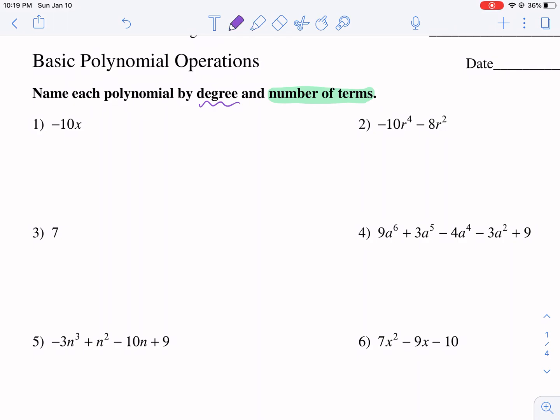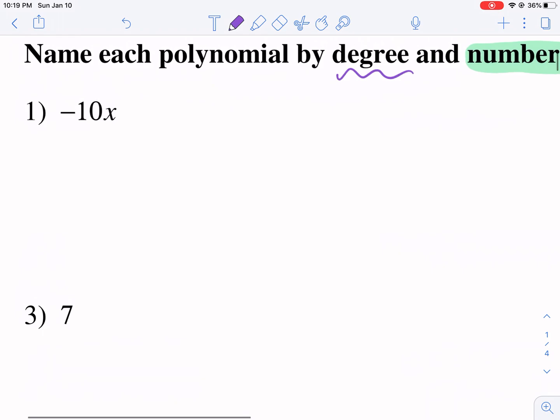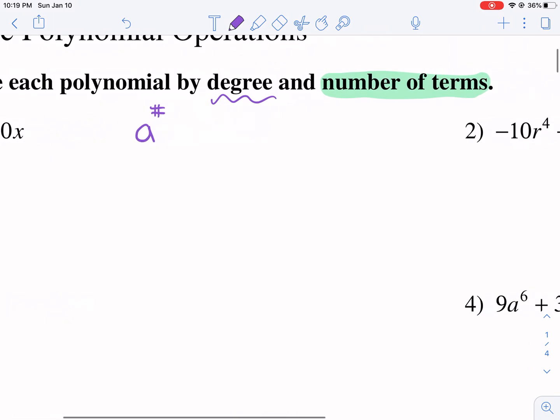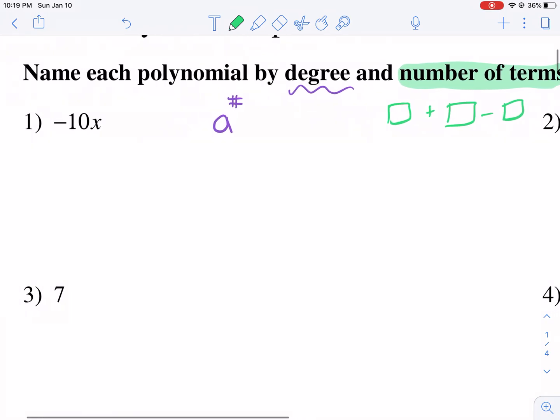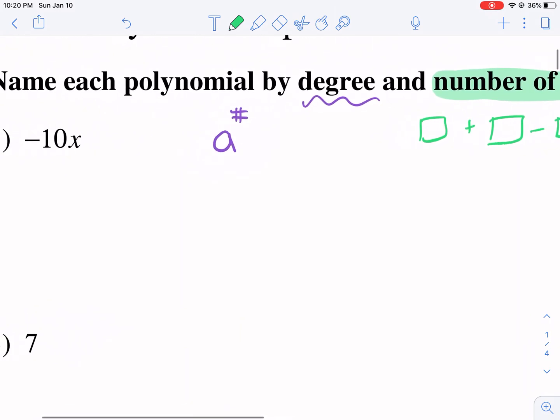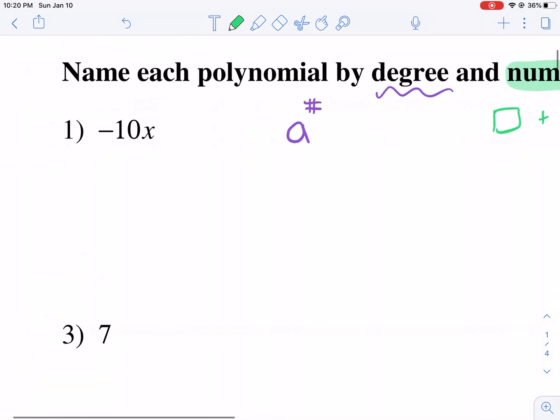When we're talking about degree of a polynomial, we're talking about what is the highest power. So the degree will be the highest power in the polynomial, in the expression. And number of terms is talking about how many different terms are separated by addition or subtraction - coefficients, constants, variables separated by addition or subtraction.